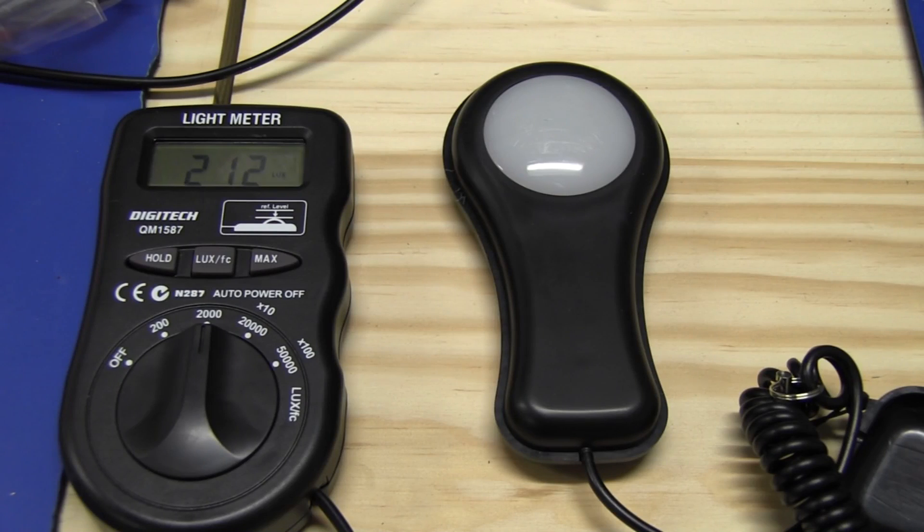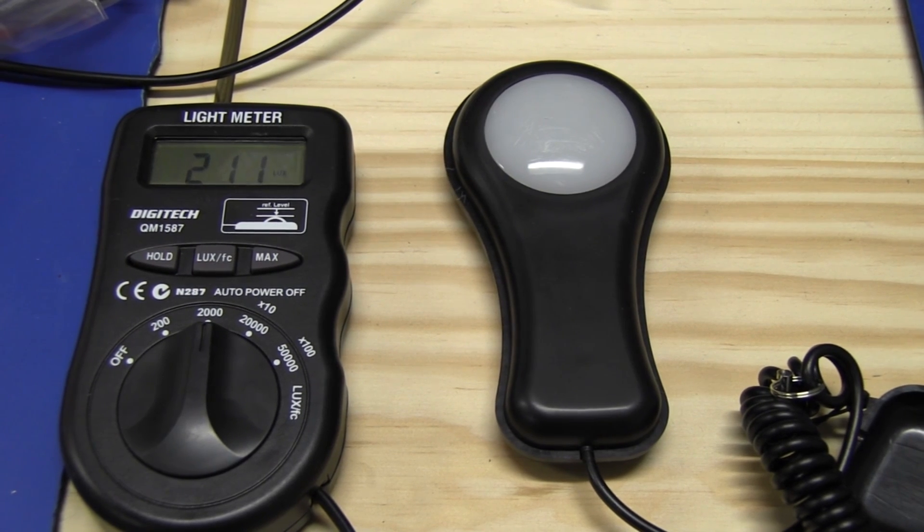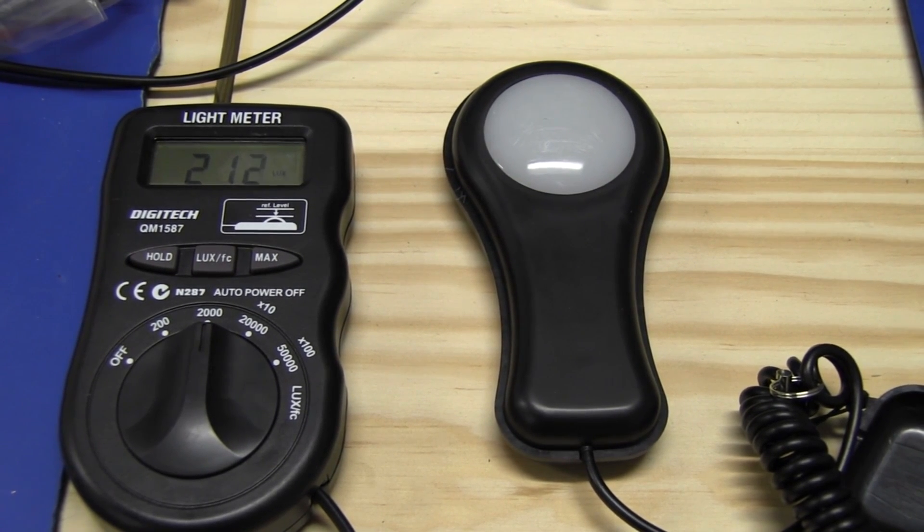But what do you know? You put the diffuser back in and bingo, we do actually have an increase. 212, 213 lux or thereabouts. So just getting in there and wiping out that dust does actually make a difference. Not much, but it does. It's certainly worth maintaining when you go in there to replace the tube or the starter.